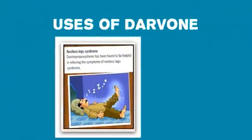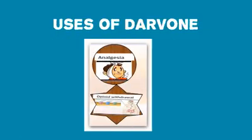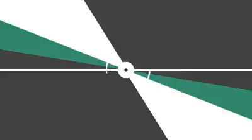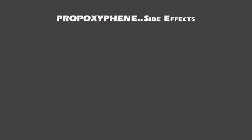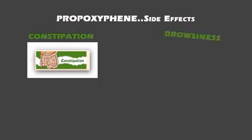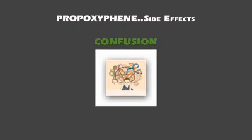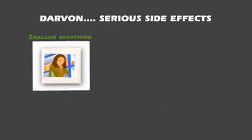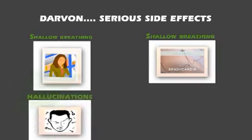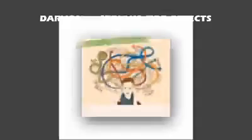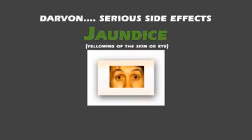Use of Novrad: antitussive. Use of Darvon: treatment of restless leg syndrome; propoxyphene has been found helpful in relieving symptoms of restless leg syndrome. Also used as an analgesic opioid with withdrawal. Side effects of propoxyphene include constipation, drowsiness, sore throat, heartburn, and confusion. Serious side effects of Darvon include shallow breathing, slow heartbeat, hallucination, headache, fainting, confusion, seizure, and yellowing of the skin or eyes.